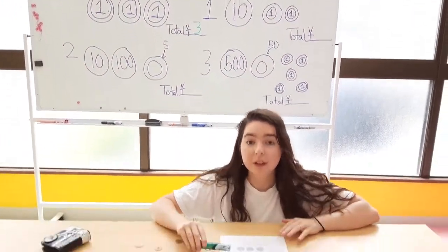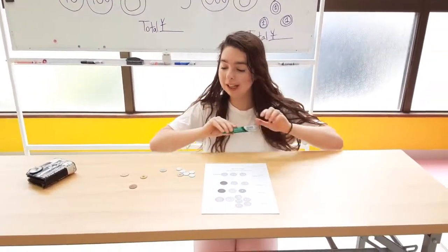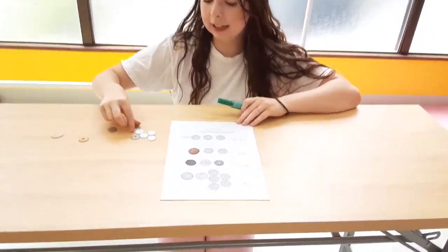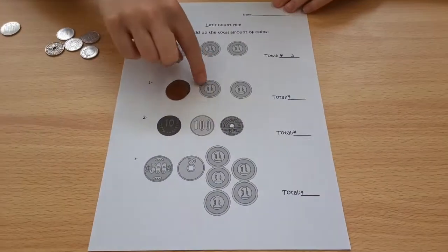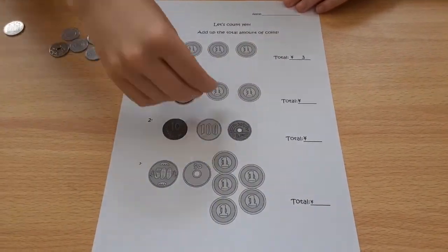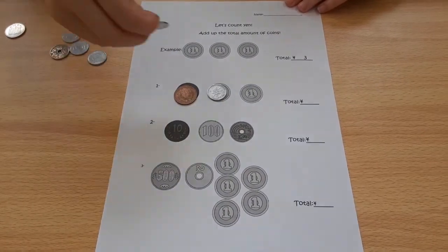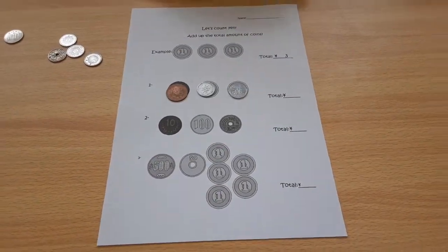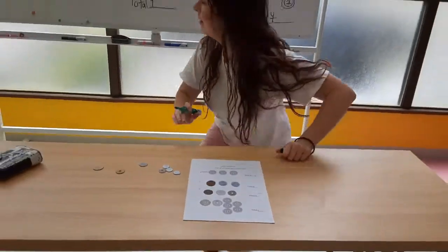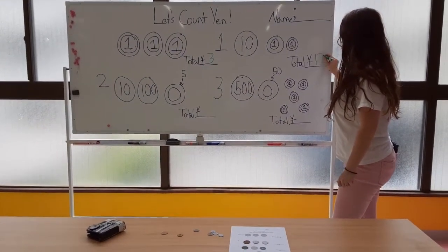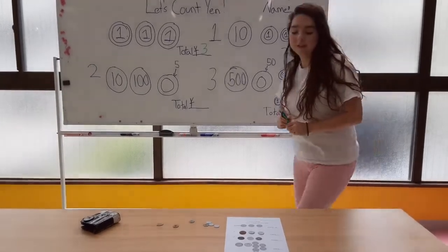Next, we're going to do number one. I see a 10 yen — so I have 10. Then I see one, two ones. So I have 10, 11, 12. I have 12 yen.